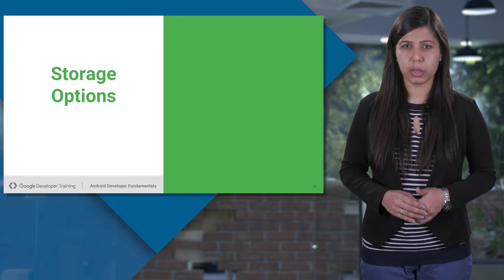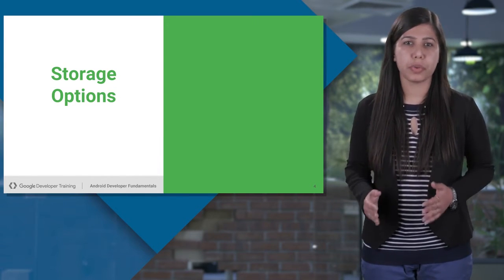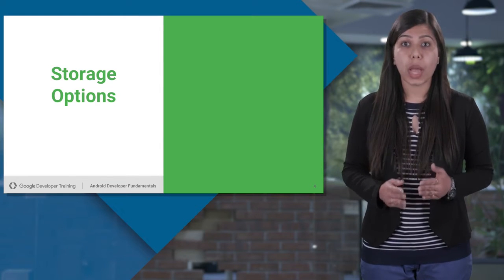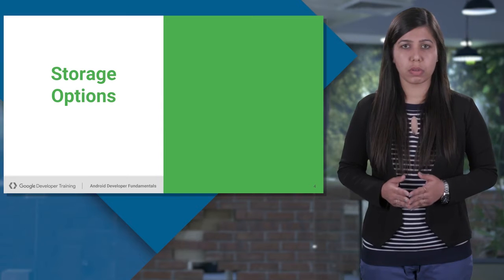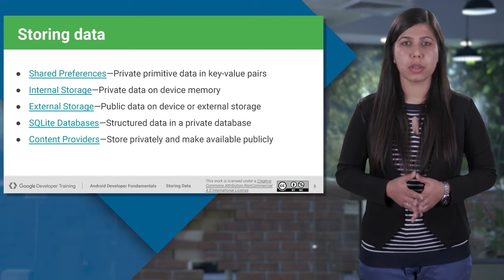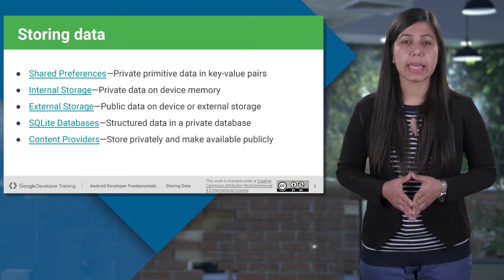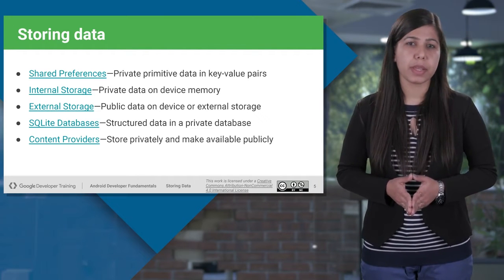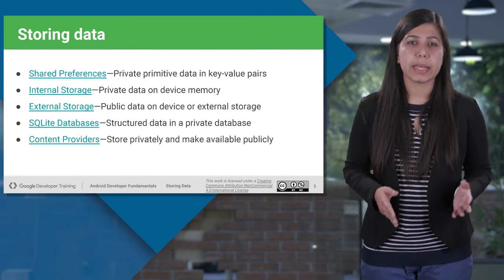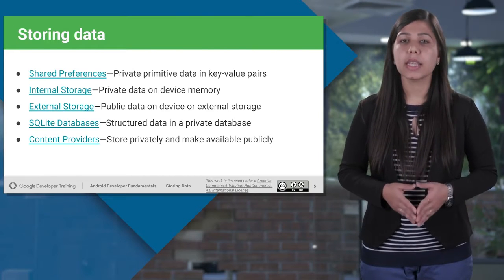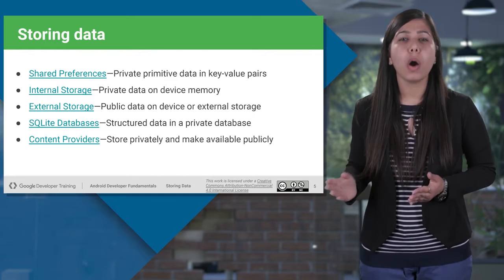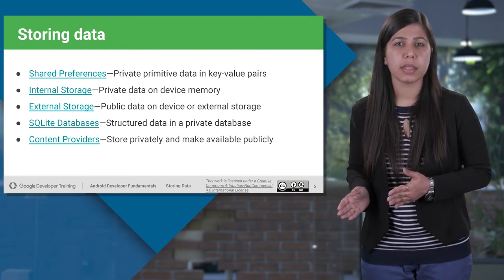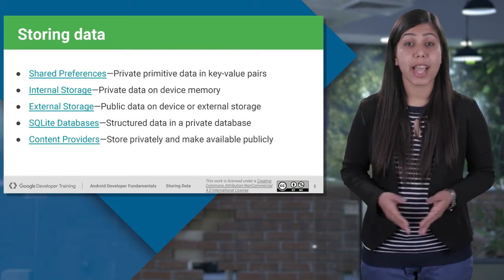First of all, how to store our data for a longer duration and make it available for your application to use whenever needed. For that purpose, Android provides a lot of storage options. There are shared preferences to store primitive type data privately in key-value pairs. Next, we have internal storage to store data on the device memory accessed privately by the application, and external storage for storing data on the device or on external media cards and SD cards that can be accessed publicly.